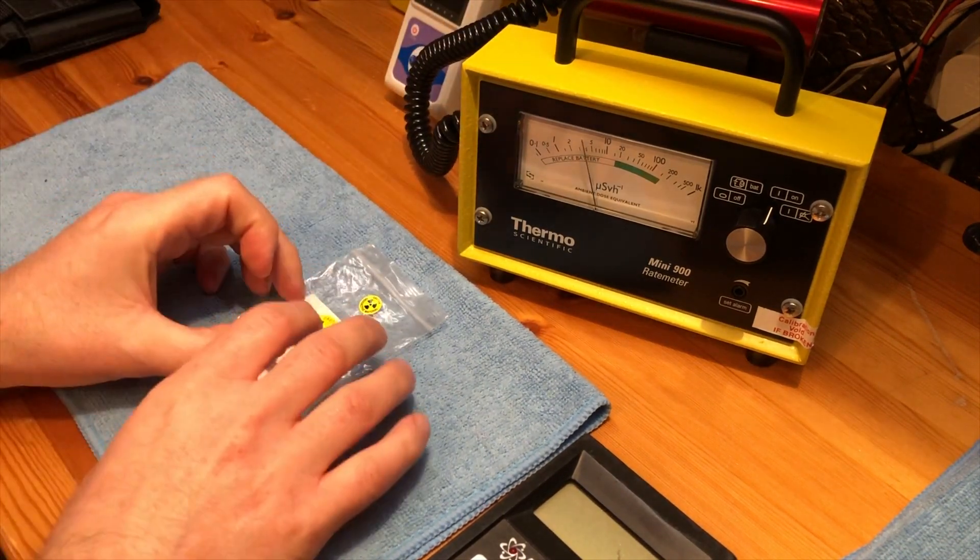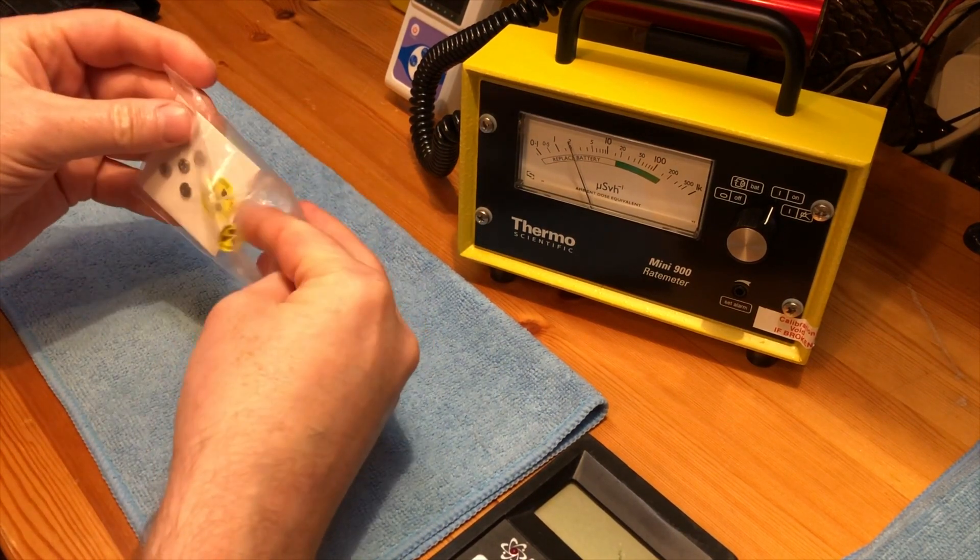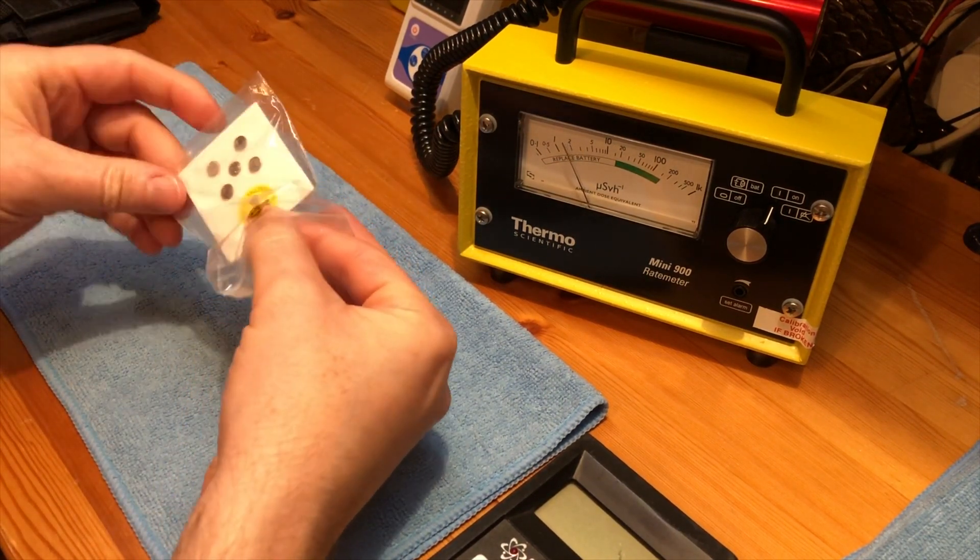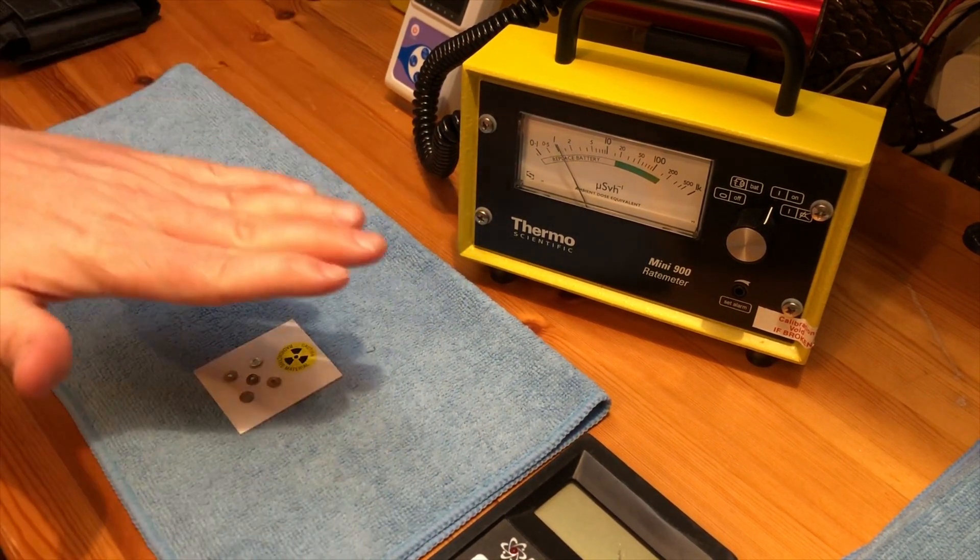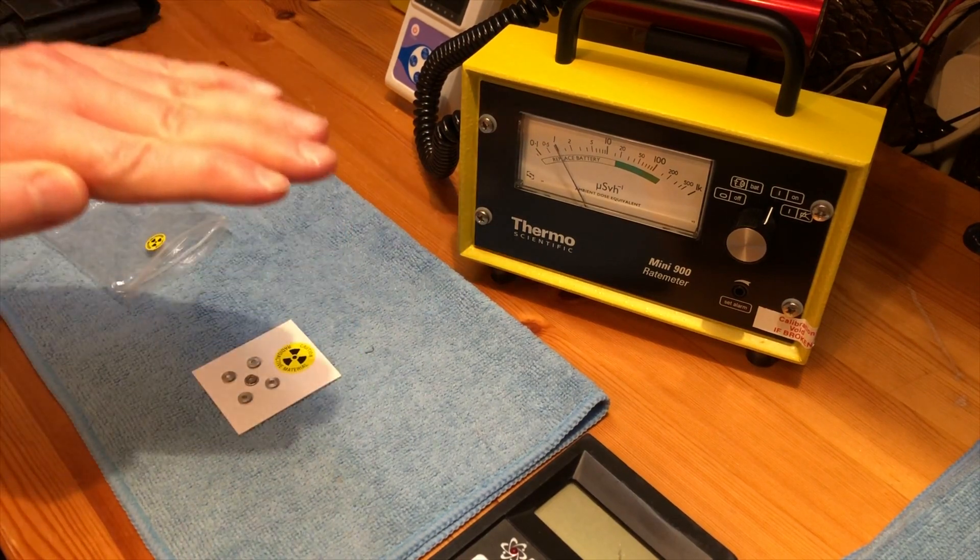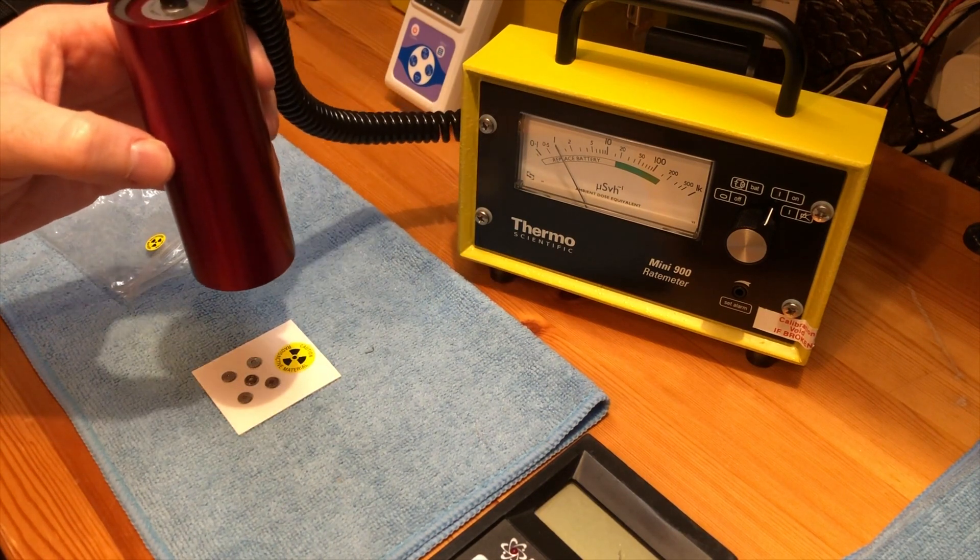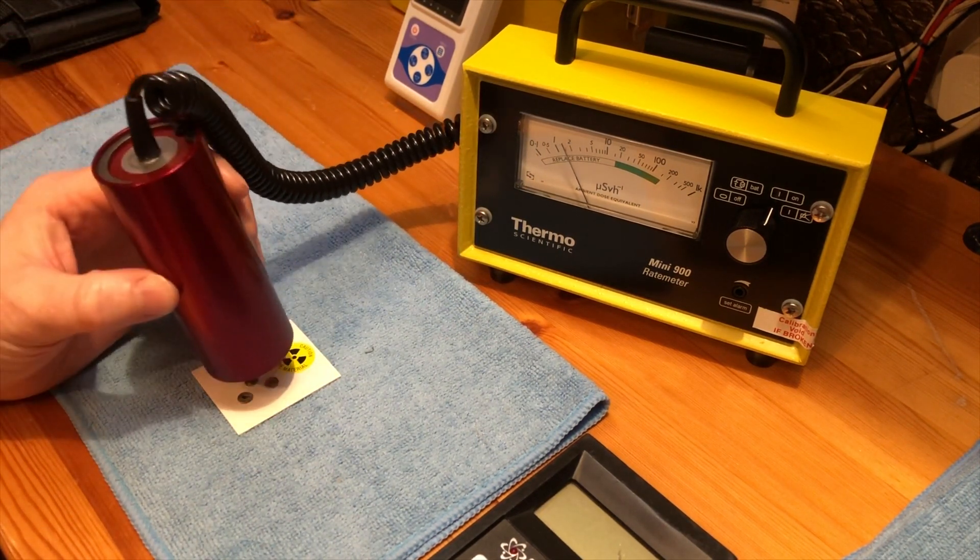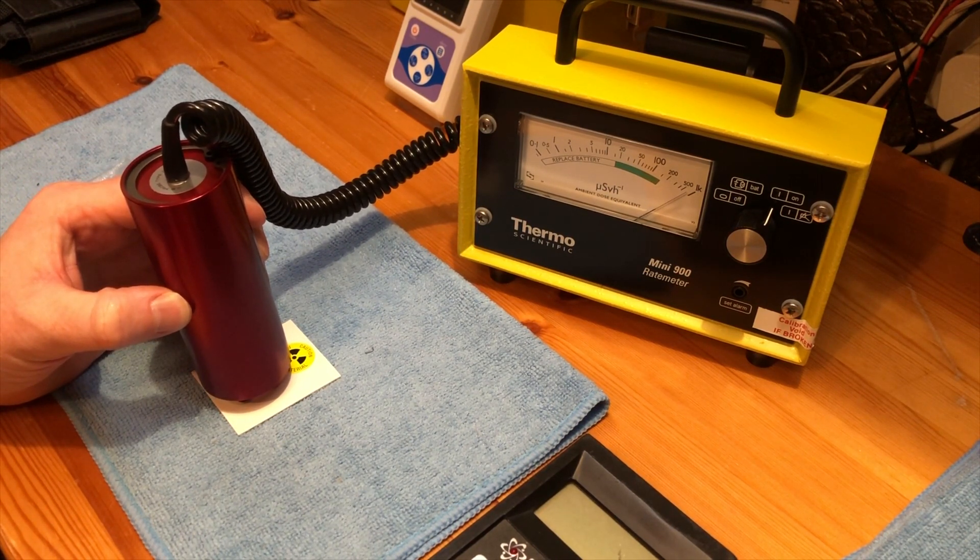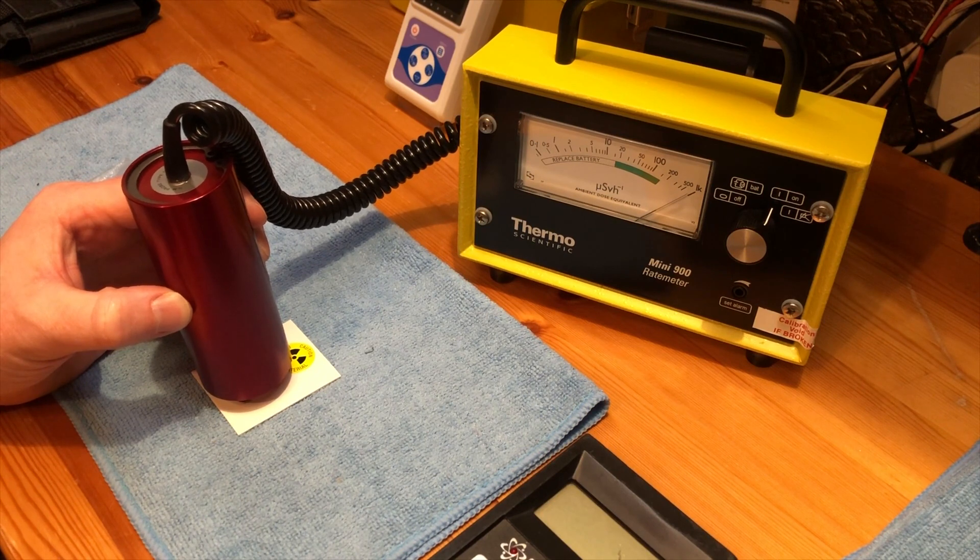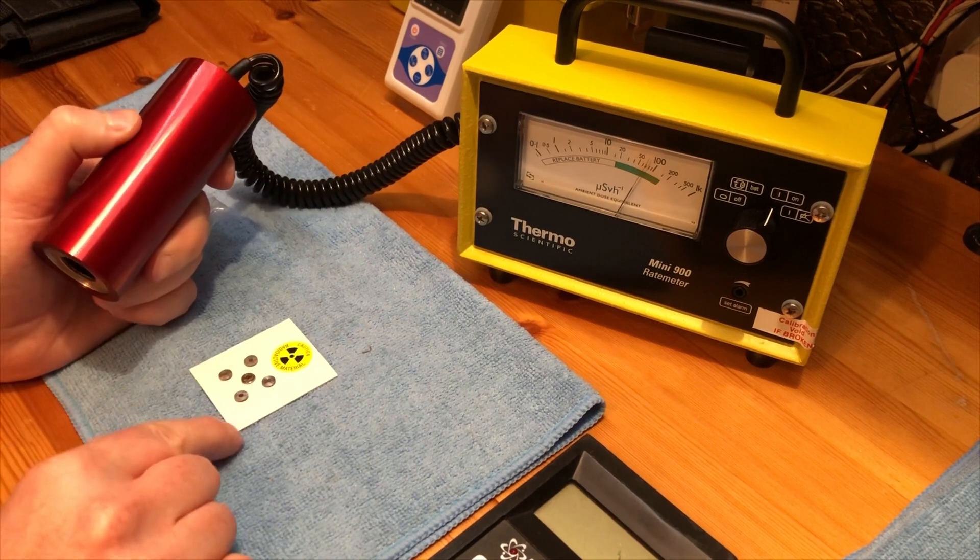The difference comes when you take the source out so it's unobstructed. I'll take the little card out. Obviously the source will be a lot stronger here. If I start up here, you can see there's very little. As we get closer, about a centimeter above, you can see we're practically at a millisievert, and that's all alpha radiation.